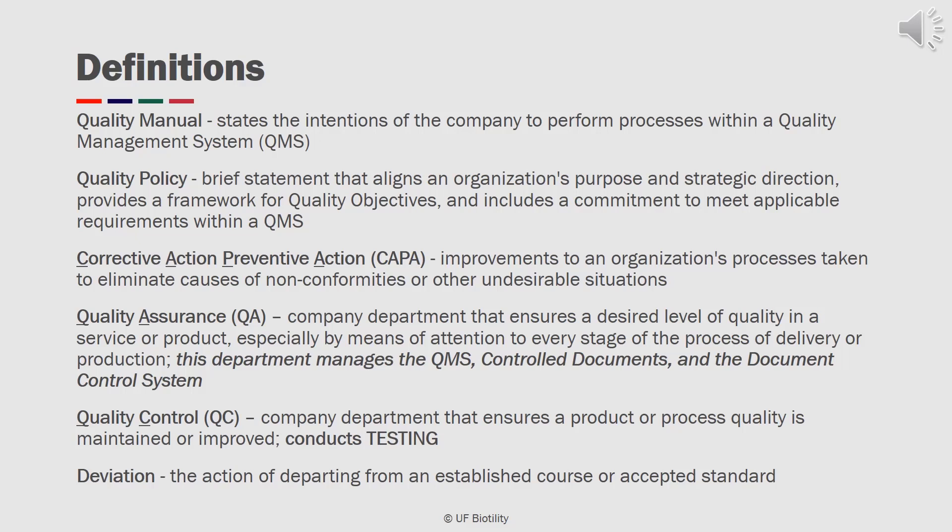Quality Assurance, or QA, ensures a desired level of quality in the service or product, especially by means of attention to every stage of the process, of delivery, and production. Quality Control, or QC, ensures that a product or process quality is maintained or improved. A deviation is the action of departing from an established course or an accepted standard.